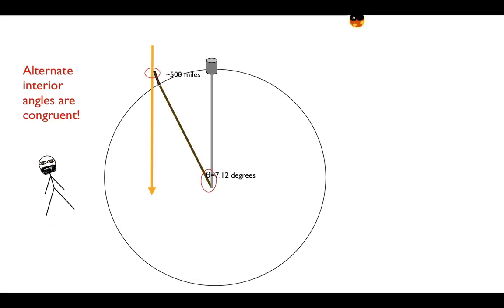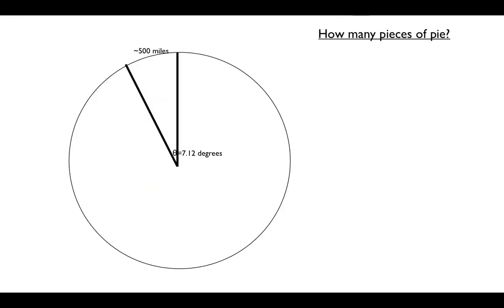And now we're almost there because we have the earth cut into a piece of pie with an angle of 7.12 degrees. So the question is, now how many pieces of pie are going to fit around the earth? So what we can do is we can just do 360 degrees divided by 7.12 degrees, because there's 360 degrees in a circle. And then he ended up using 7.2 degrees simply because 7.2 goes into 360 degrees an even number of times - it's 50.